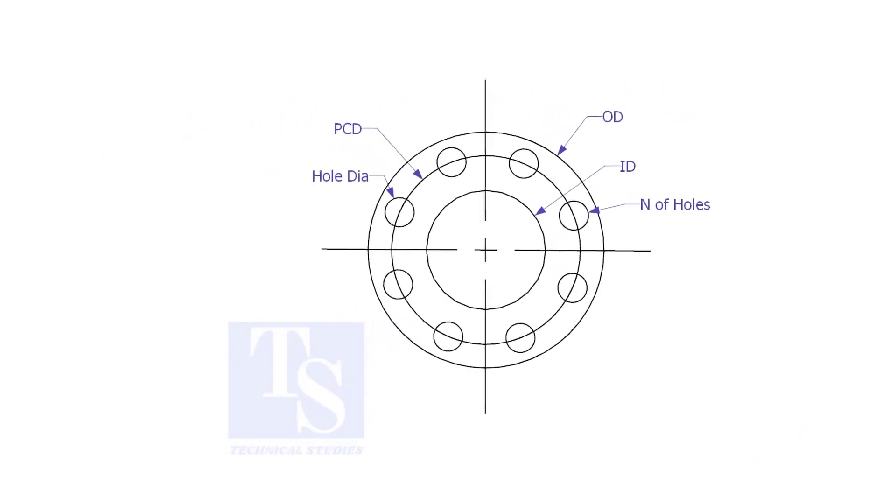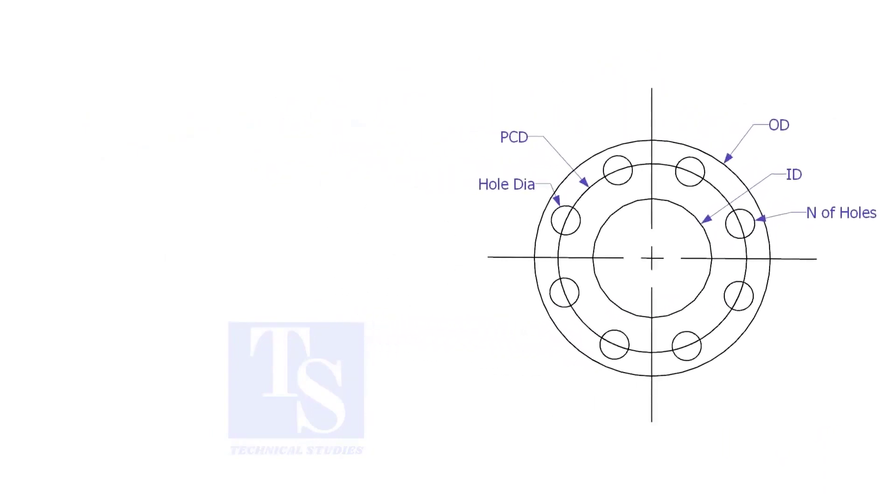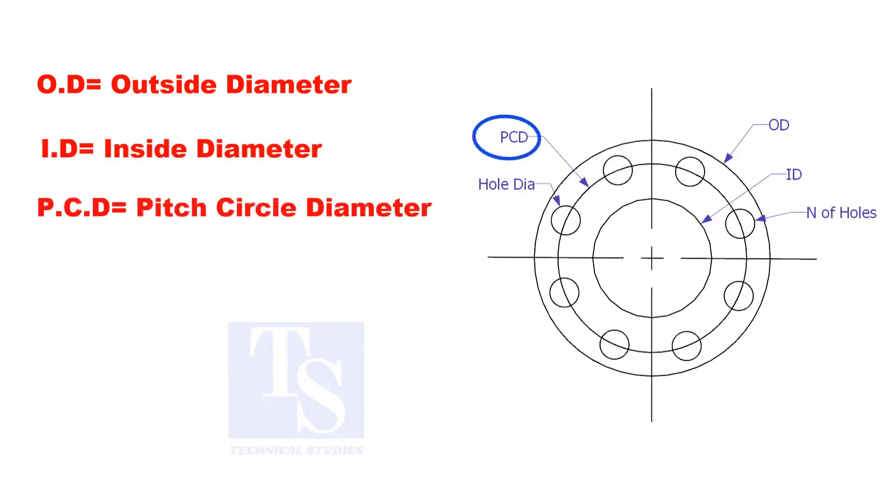To make a plate flange, we need to know the following things: OD, the outside diameter; ID, the inside diameter; PCD, the pitch circle diameter; number of holes; and the hole size.